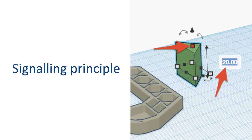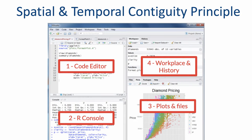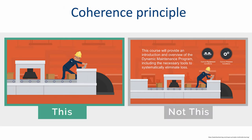People learn better when cues are added that highlight key information. When infographics are learning objects, the teacher selects and highlights the most important information. People learn better when the corresponding words and pictures are presented close to each other in time and in space. People learn better when extraneous material is excluded rather than included. The process of creating an infographic is itself the process of excluding extraneous information and highlighting the most important information for your readers.